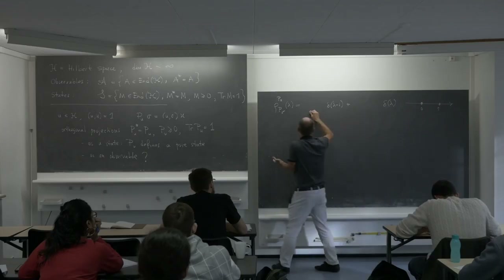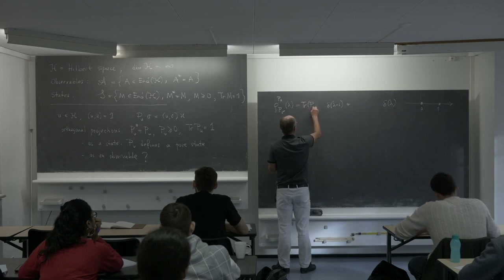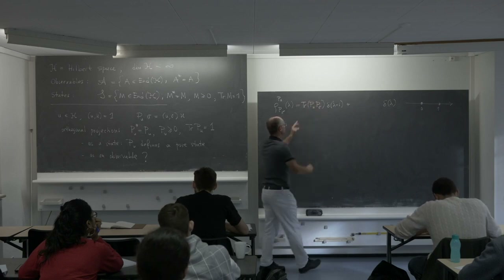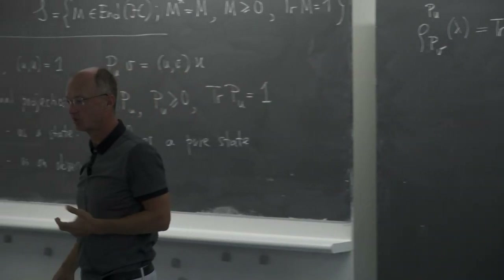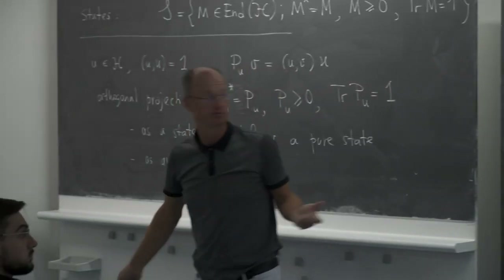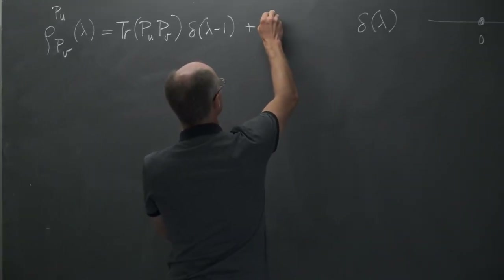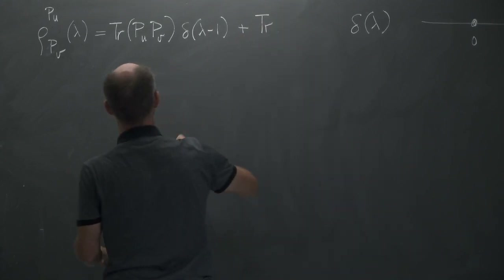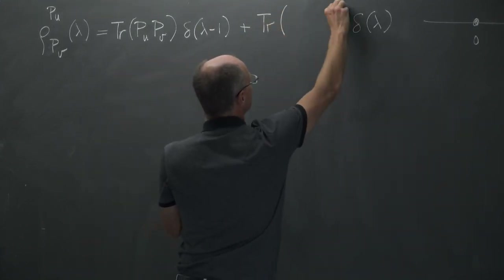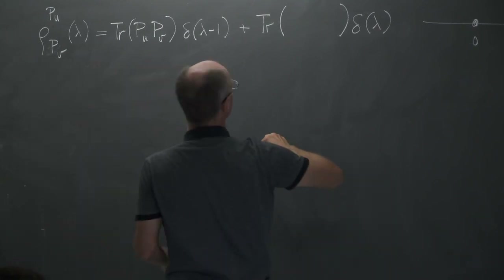The probability is just the trace of a product of the observable times the state. Here will be the probability corresponding to eigenvalue 1, and here will be one minus that for eigenvalue 0.